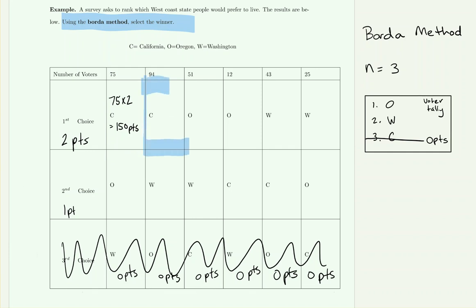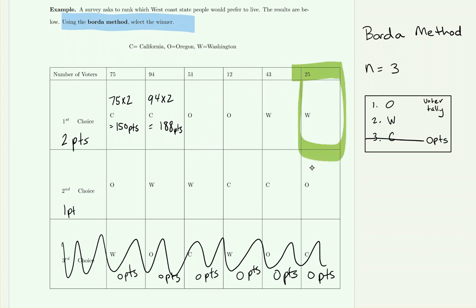Similarly, the next box is also a first place vote for California — 94 people voted this way, differing only in their second and third choices. We multiply 94 by two to get 188 points for California. Now pause the video and continue finding the points for the remaining first-place boxes on that row, then check your work.